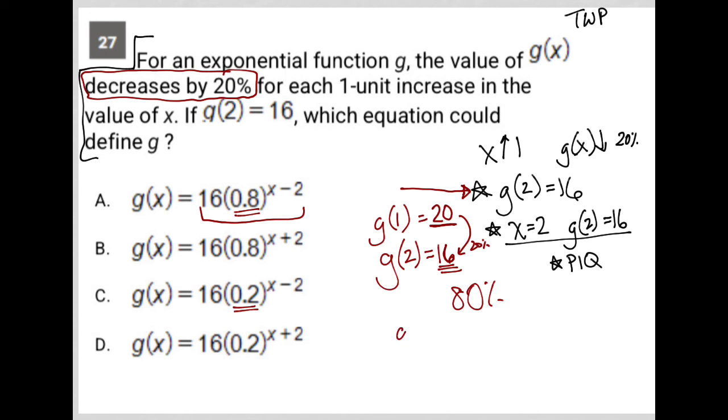So in essence, g(3), for instance, should be 0.8 times 16. Should be 80% of the previous value. And g(4) should be 0.8 times g(3), right? It shouldn't be 20% of that. So I'm liking choice A for that reason, because it has 0.8 here instead of the 0.2.